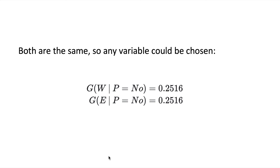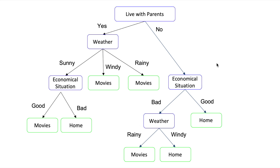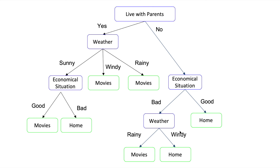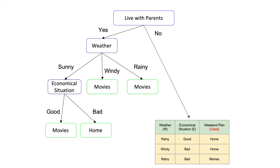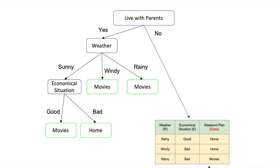Both variables have the same information gain, so we can pick either one. Let's choose economical situation. When economical situation is good, we have just one row and it's home. When it's bad, we have 50% in each case so we need to split again by weather, giving two stopping cases. I encourage you to validate this from the table.